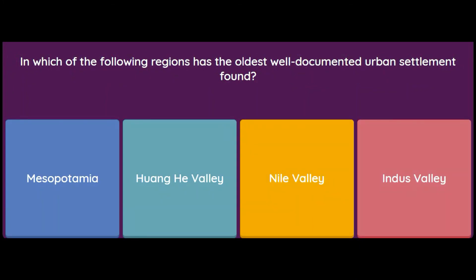This brings us to the last question of Part 2. In which of the following regions has the oldest well-documented urban settlement been found? Mesopotamia, Huang He Valley, Nile Valley, or Indus Valley? The answer is the Indus Valley — it is the oldest well-documented urban settlement. Thank you for watching. I wish you all success and good luck for your exams. Keep watching and keep sharing.